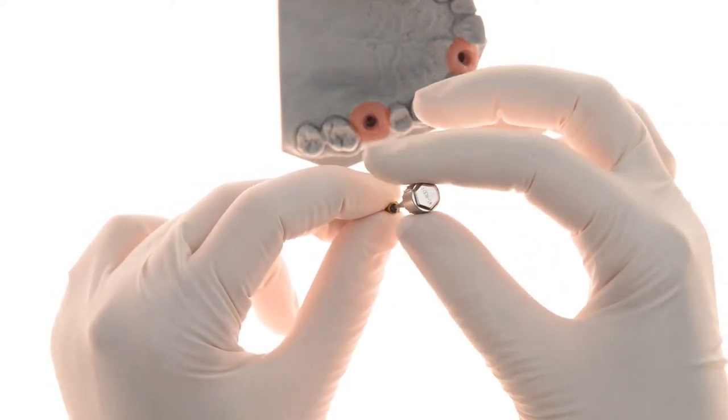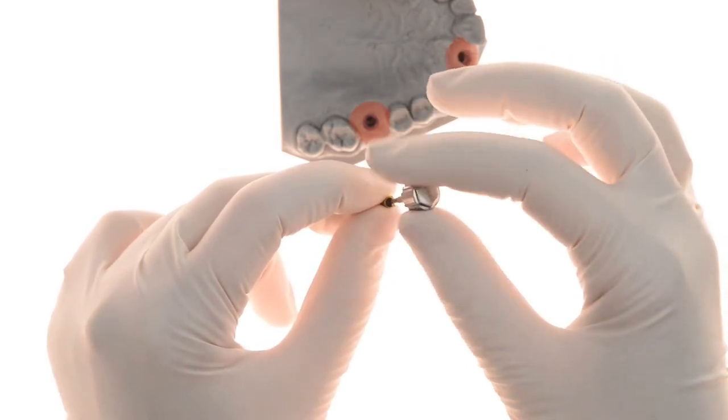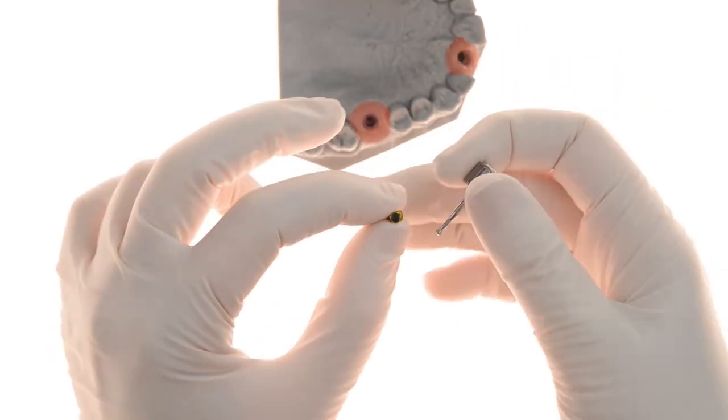Then the monoblock restoration is cemented to the abutment. Finally, the EasyBase restoration is screwed and tightened to the implant.